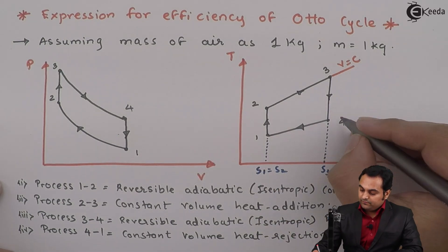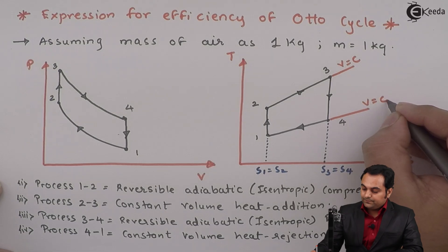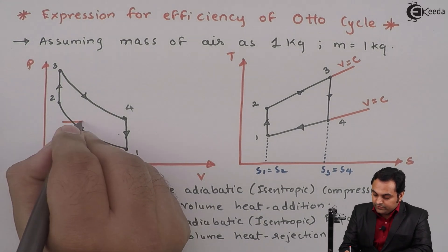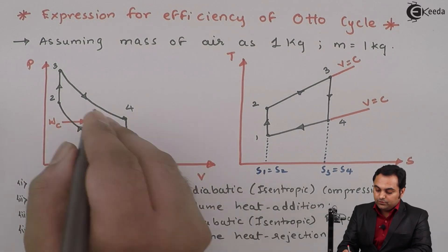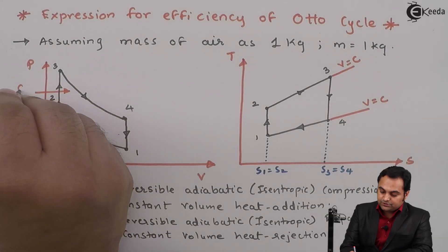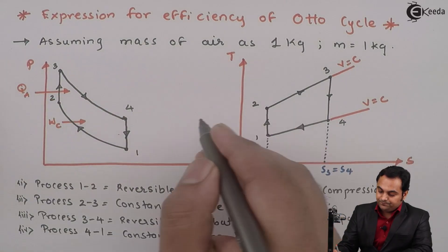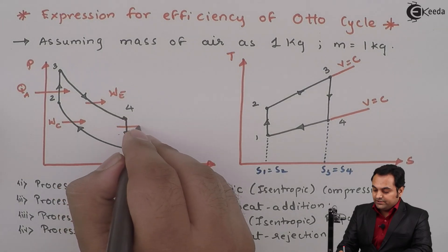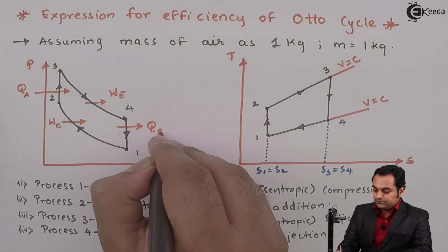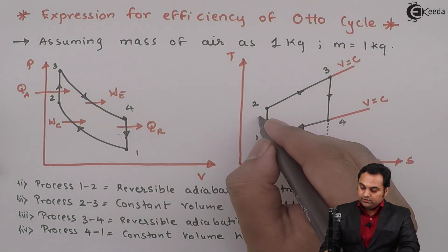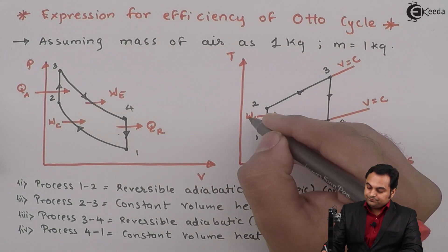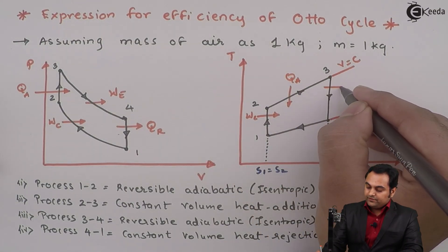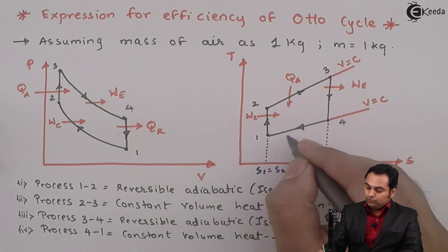Then process 4 to 1 is constant volume heat rejection, again a diverging constant volume line. So to summarize: 1 to 2 is compression work input, 2 to 3 is heat addition QA at constant volume, 3 to 4 is work output during expansion, and 4 to 1 is heat rejection out of the system.